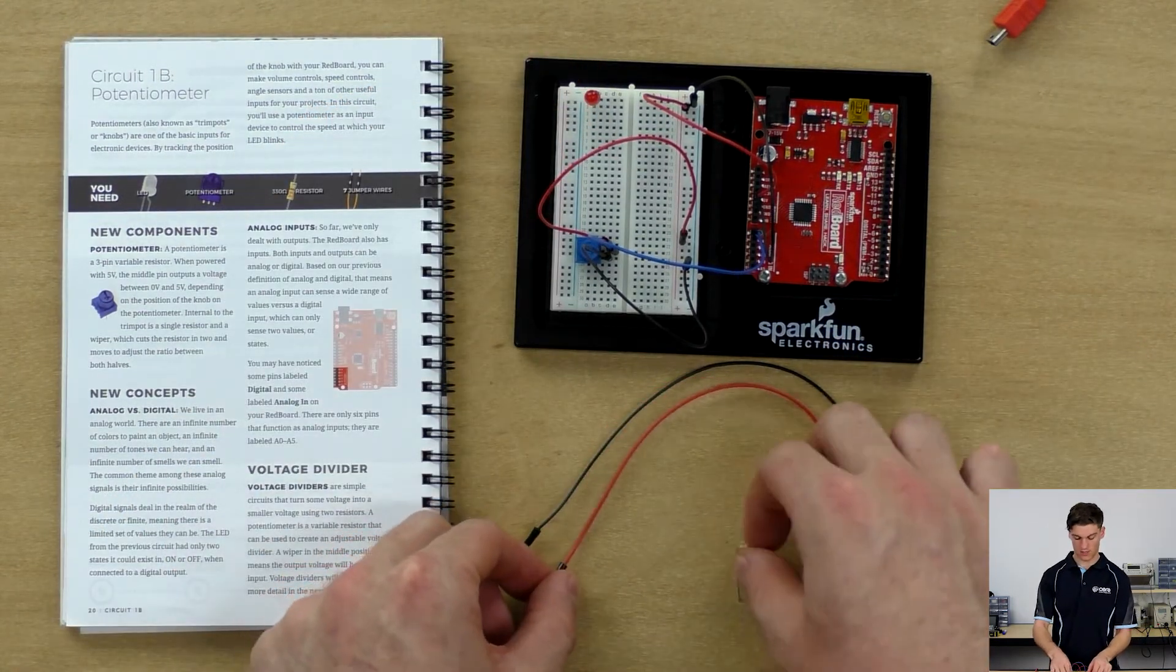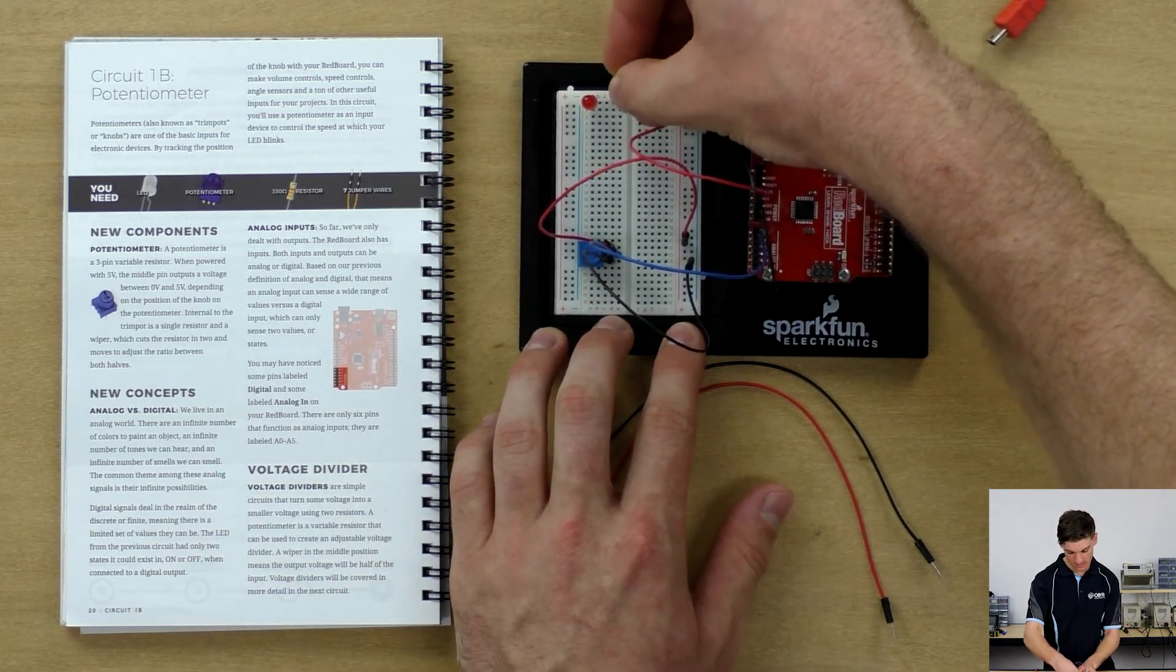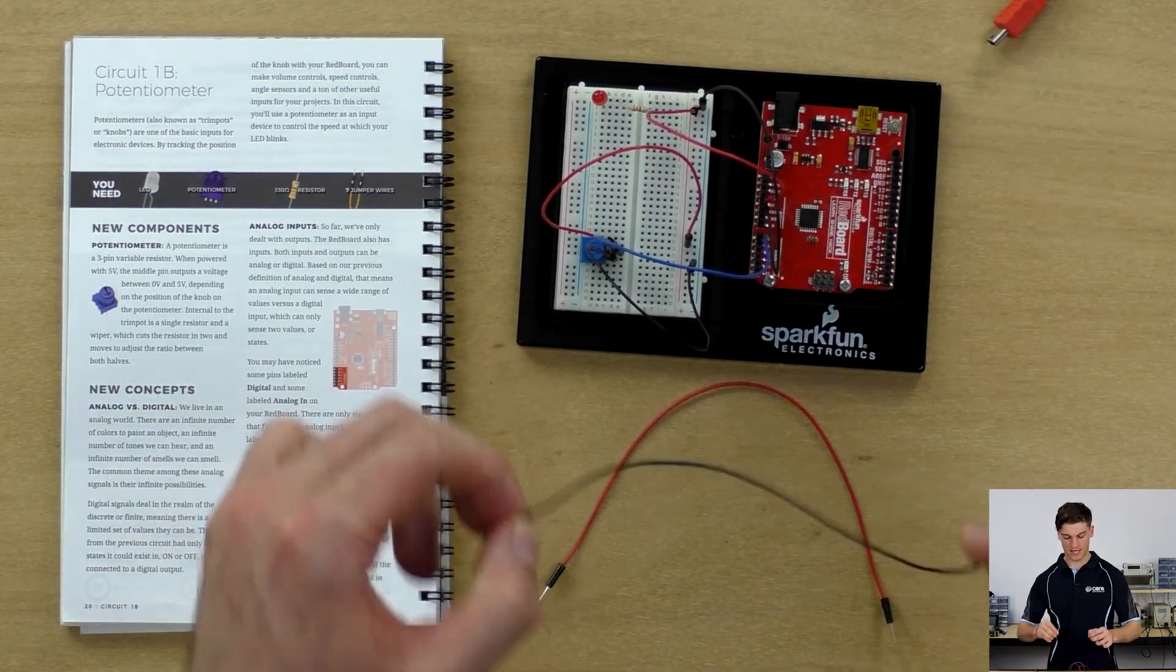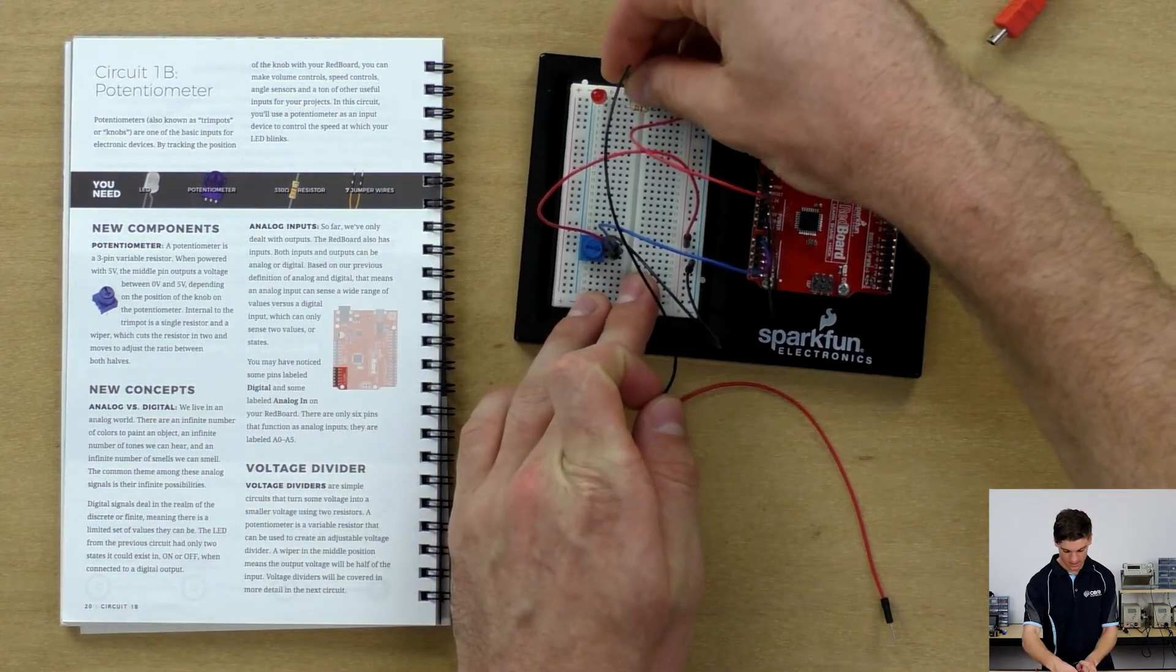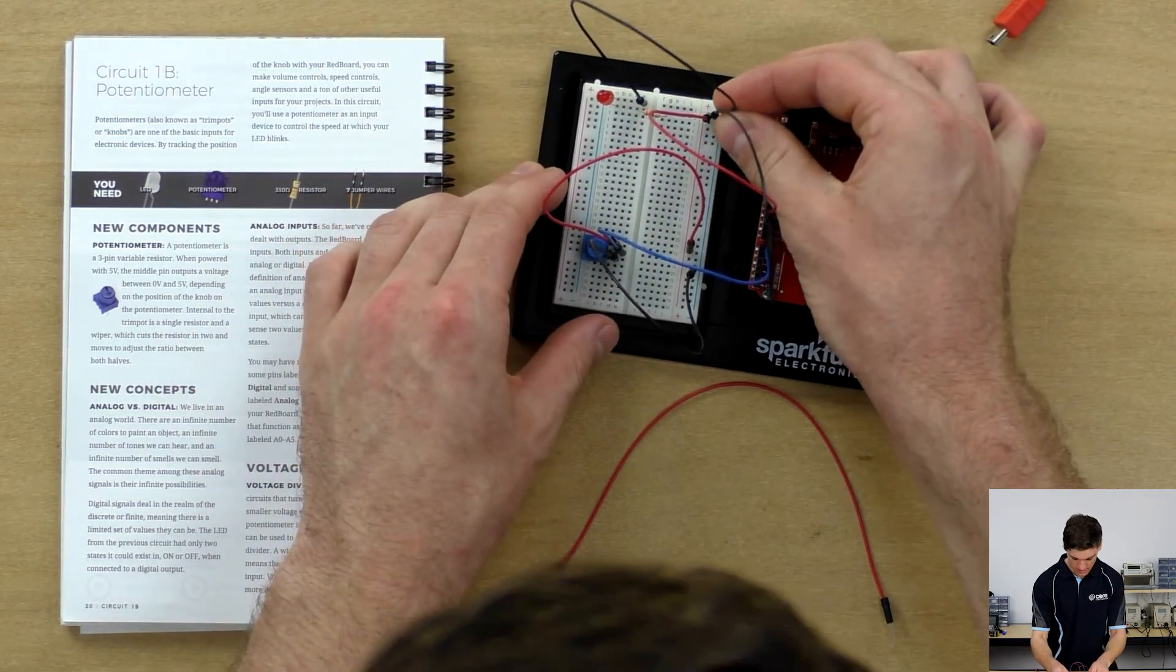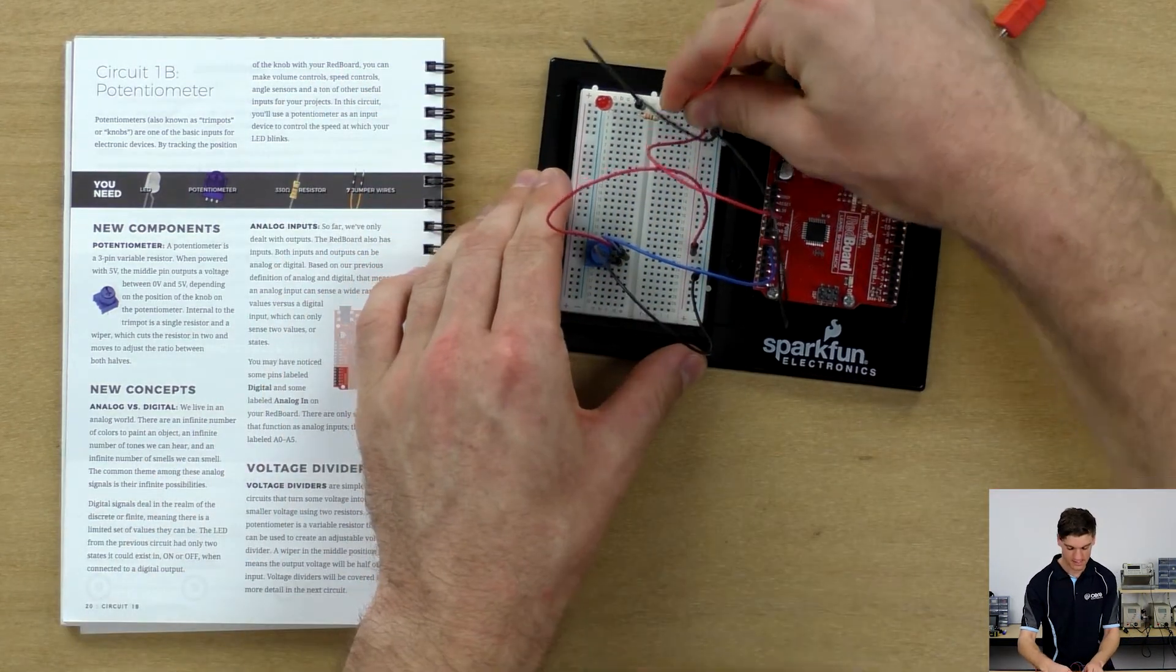We're also going to use the resistor as we did in the previous one to limit the current. E2 to F2, it's going to bridge that little gap. Then we're going to connect E1 to the negative rail and J2 to pin 13.